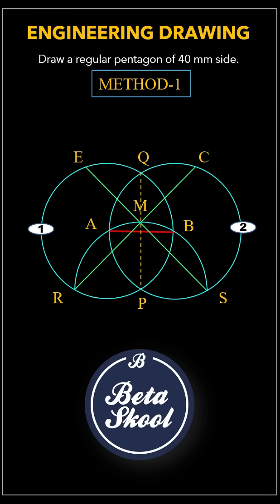With your compass still set to radius AB, draw two more arcs, one from point C and another from point E. These two arcs will intersect at a new point. Mark this point as D.